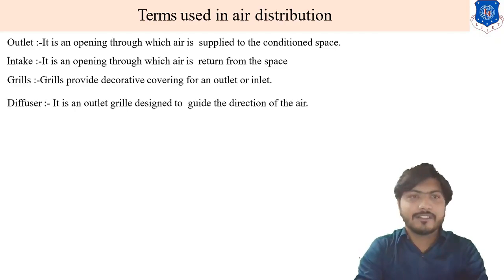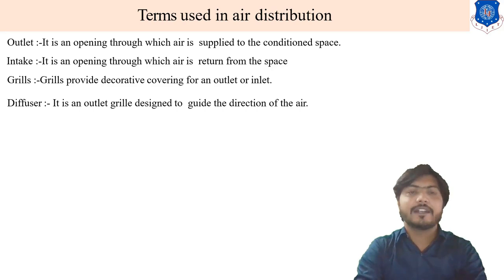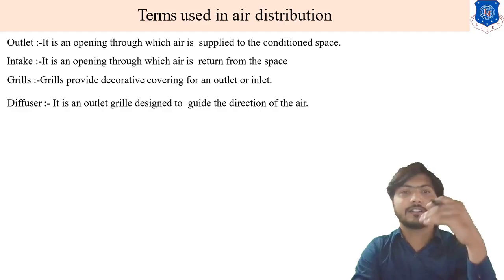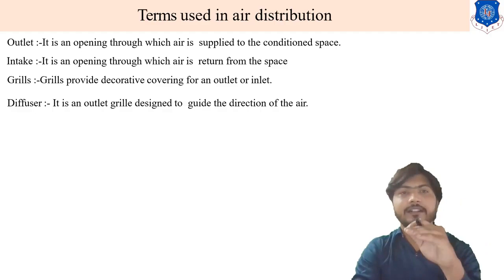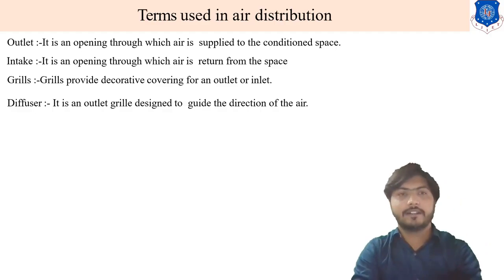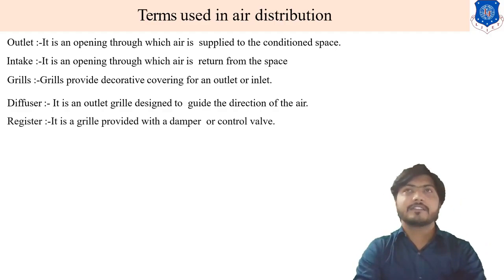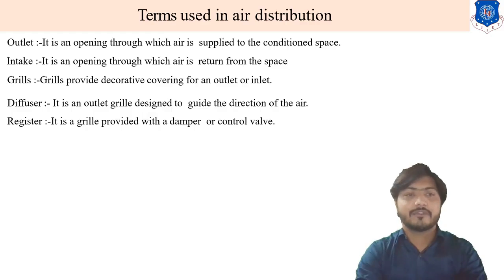Next is diffuser. What is a diffuser? It is an outlet grill designed to guide the direction of air. It guides the air at the outlet. That is known as a diffuser.